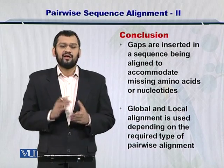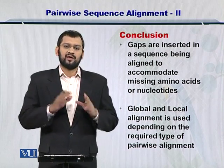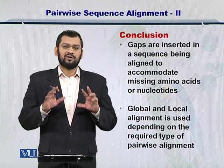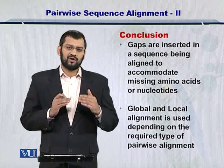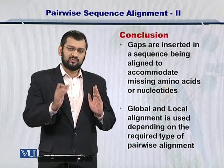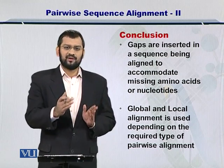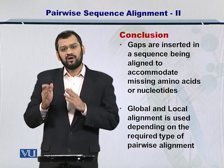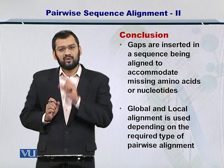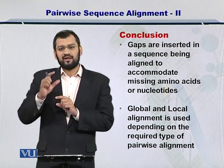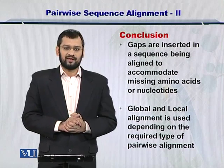In conclusion, gaps are inserted to accommodate insertions and deletions of nucleotides or amino acids from sequences during the evolutionary process. Global and local alignments are used depending on our objective for aligning the two sequences. If we are trying to compare the entire sequence versus another sequence, we can use global alignment. Or if we are trying to compare only portions of one sequence and another sequence, we may go for local sequence alignment.